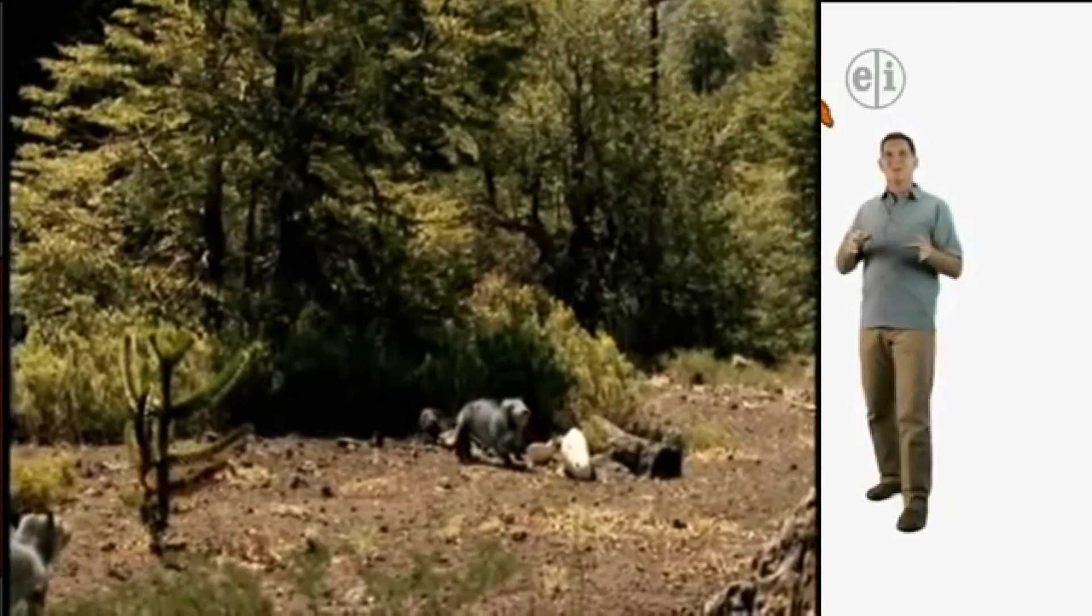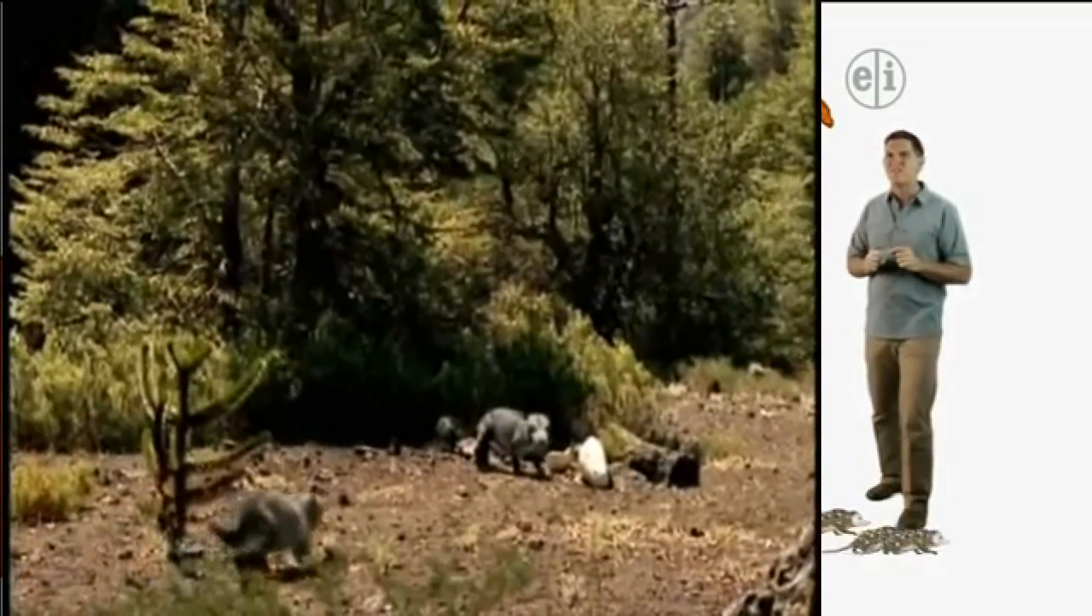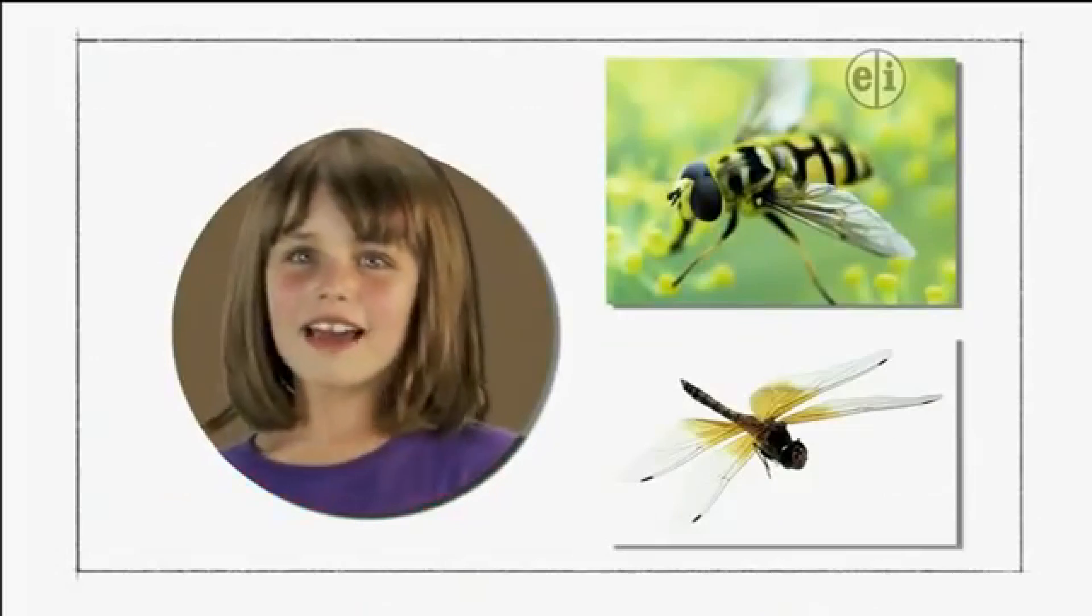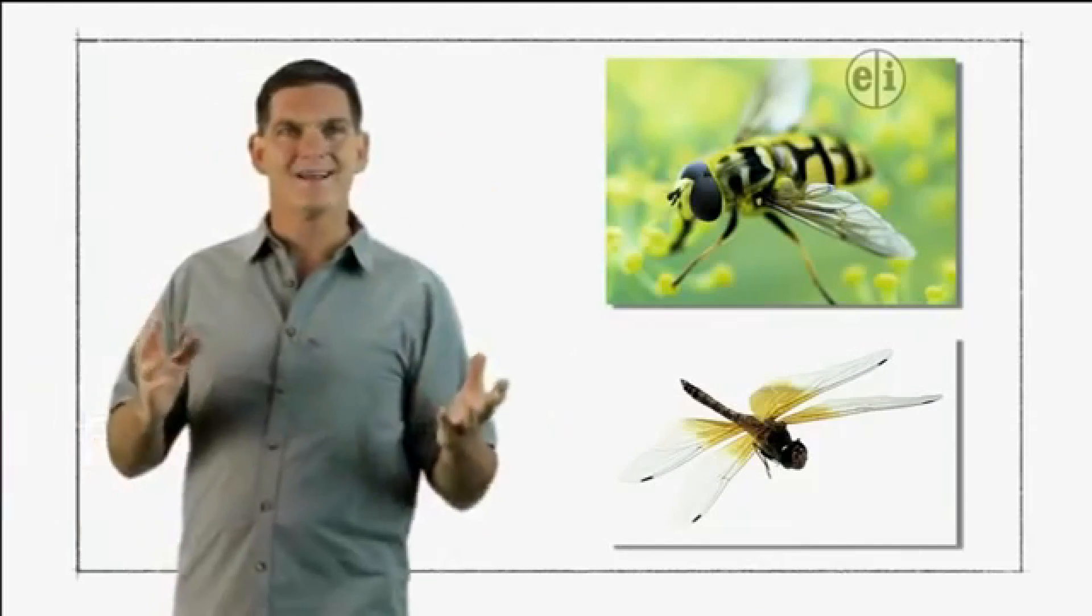Back in the Mesozoic, little mammals scurried beneath the feet of the dinosaurs. Paleontologists think that cimolestes and other ancient mammals were active mostly at night and ate lots of insects. Bees and dragonflies. Exactly.